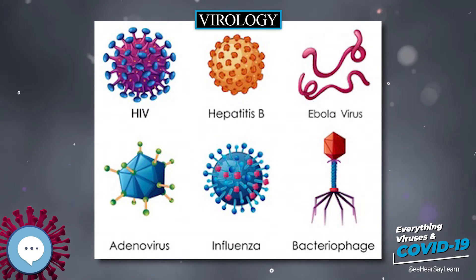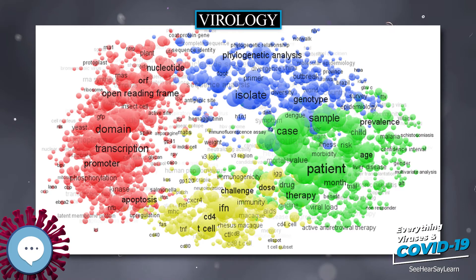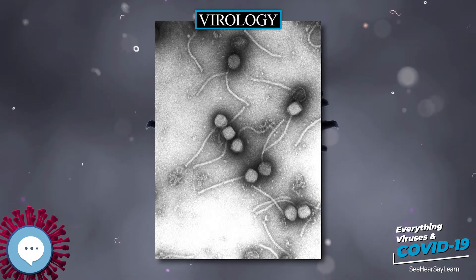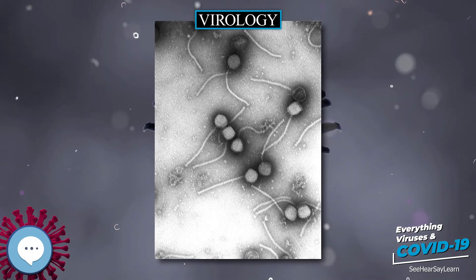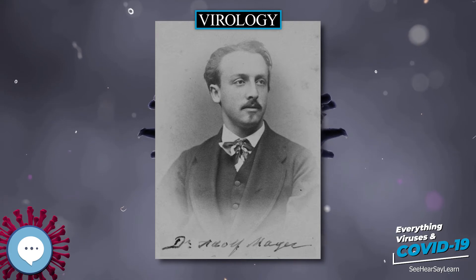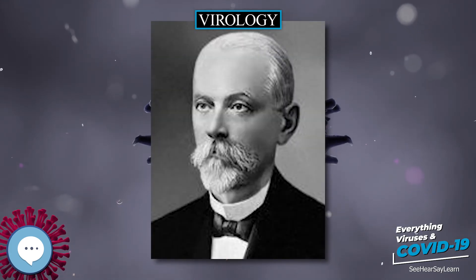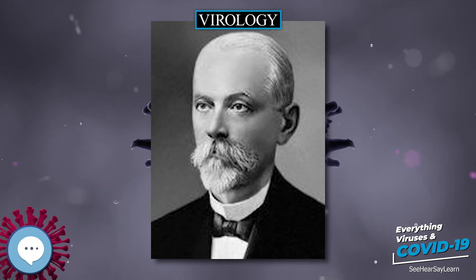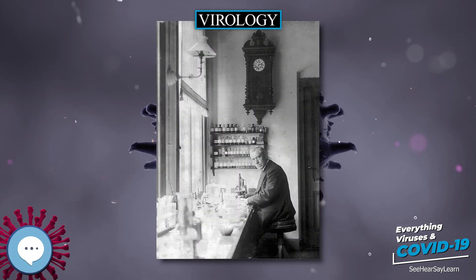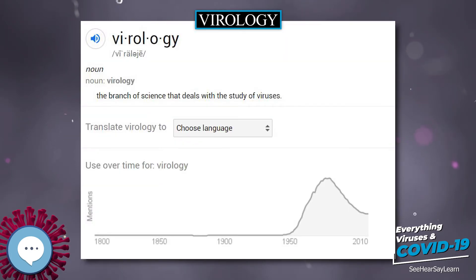Monoclonal antibodies, specific to the virus, are also used for detection, as in fluorescence microscopy. A second defense of vertebrates against viruses, cell-mediated immunity, involves immune cells known as T cells. The body's cells constantly display short fragments of their proteins on the cell's surface, and if a T cell recognizes a suspicious viral fragment there, the host cell is destroyed and the virus-specific T cells proliferate. This mechanism is jump-started by certain vaccinations.